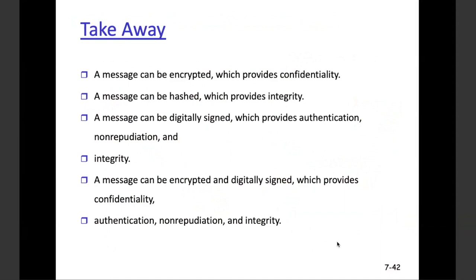Key takeaways: to attain confidentiality, the message has to be encrypted. To attain integrity, the message has to be hashed — because the hash value will change if data is changed and you'll know. If a message needs to be signed — providing authentication and non-repudiation — if I digitally signed a message, I can never deny I sent it. That's why digital signatures are used at government firms and over confidential emails. If a message can be encrypted and digitally signed, it can provide confidentiality, authentication, non-repudiation, and integrity all at the same time.